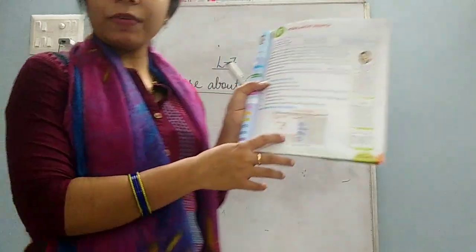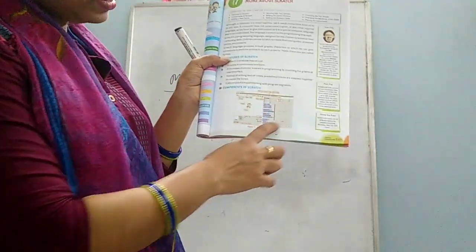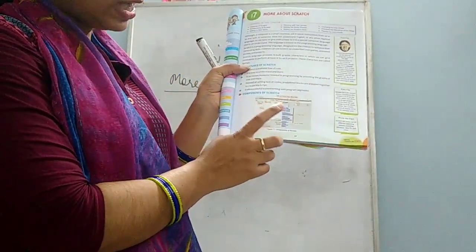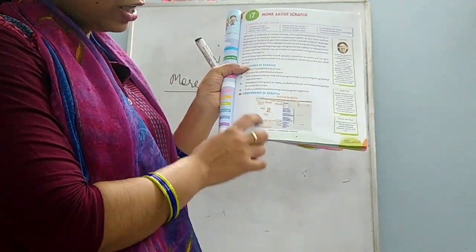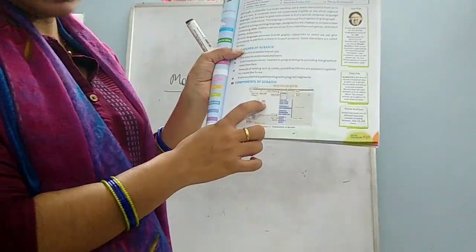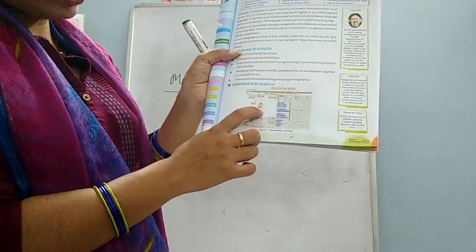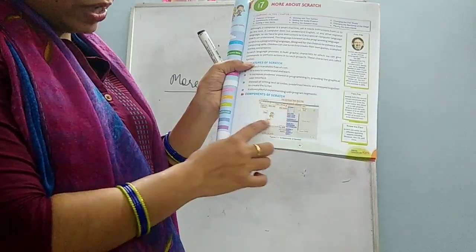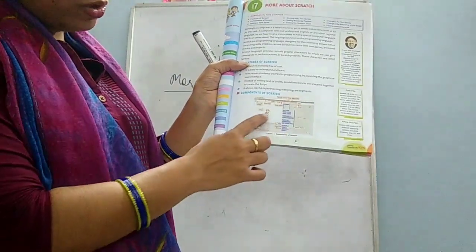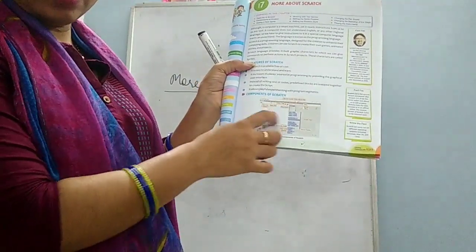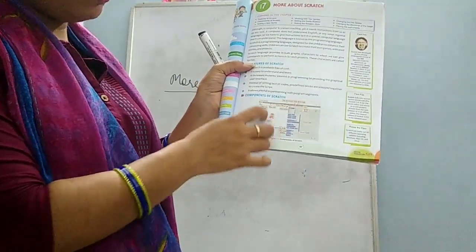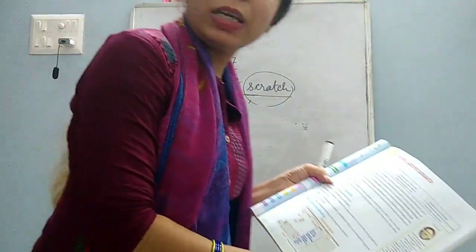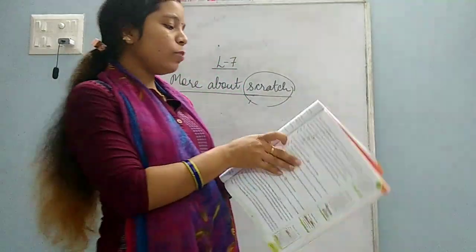This is the window of scratch. When you will open scratch on your computer, this window you will get - you can see in your book. You can see the sprite is also given here. This is your sprite, and it moves on the stage according to the instructions we give to the sprite.